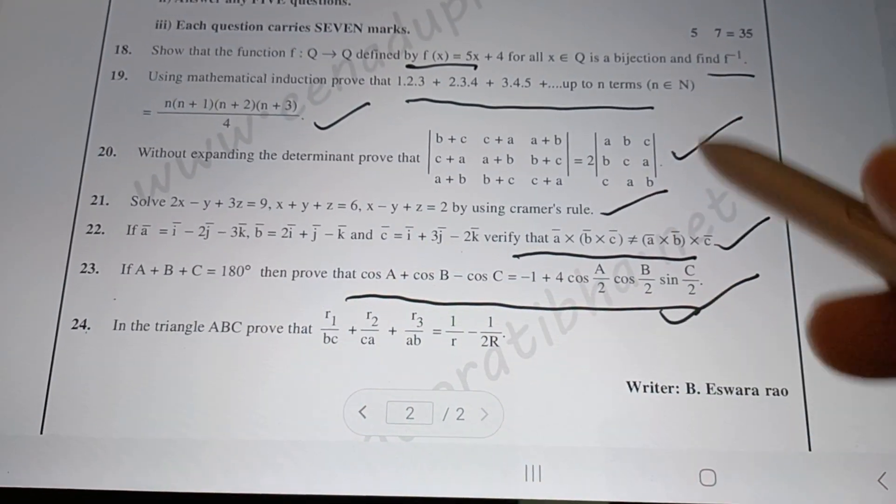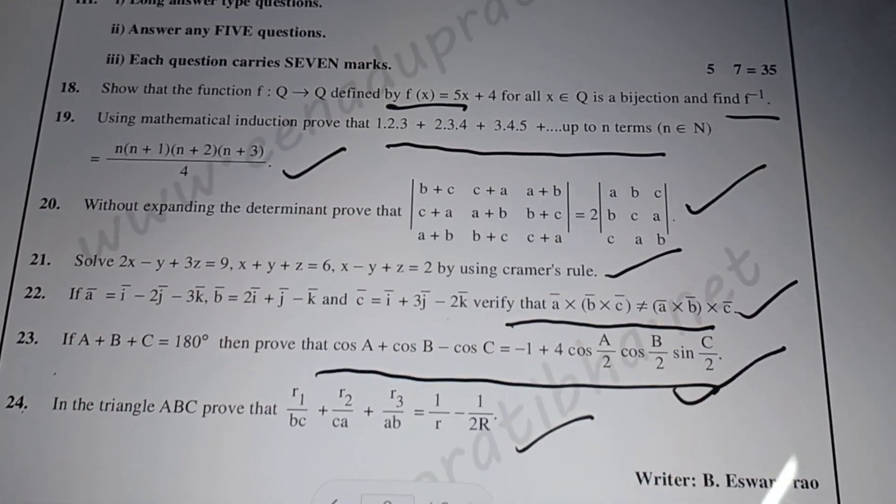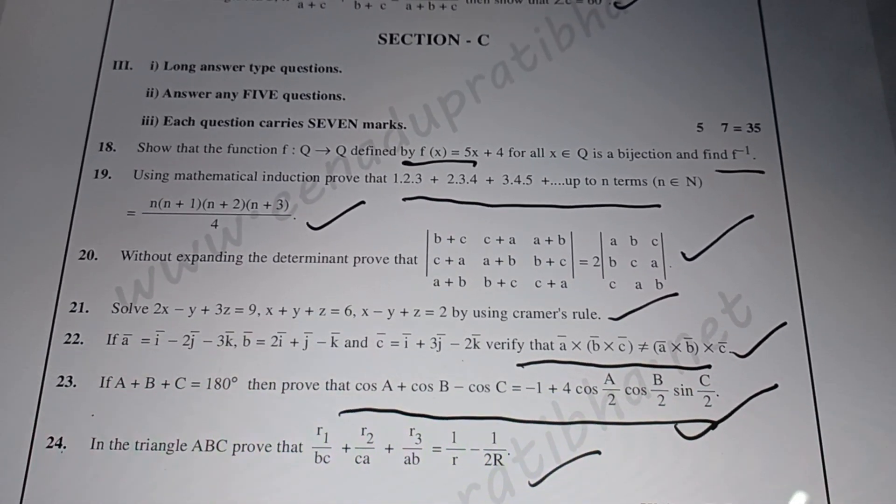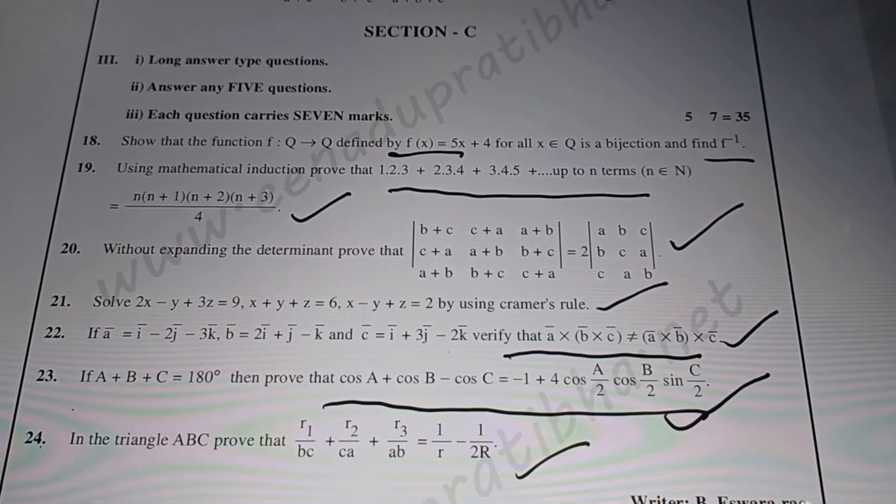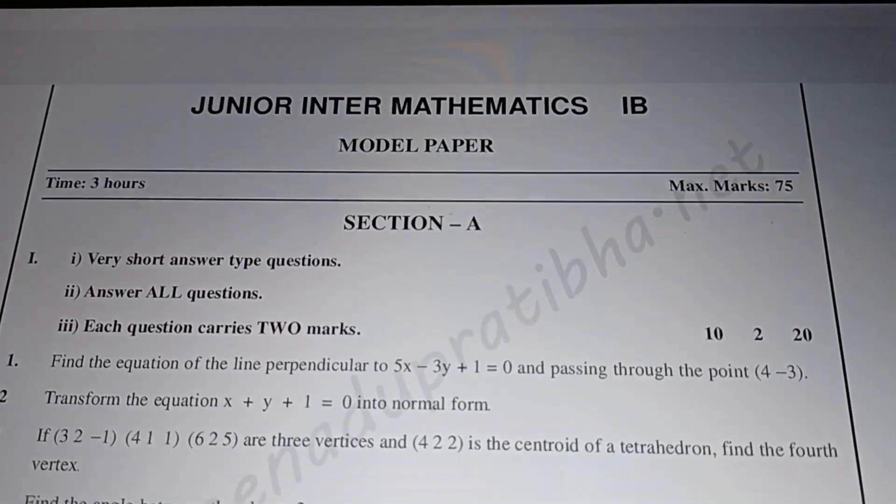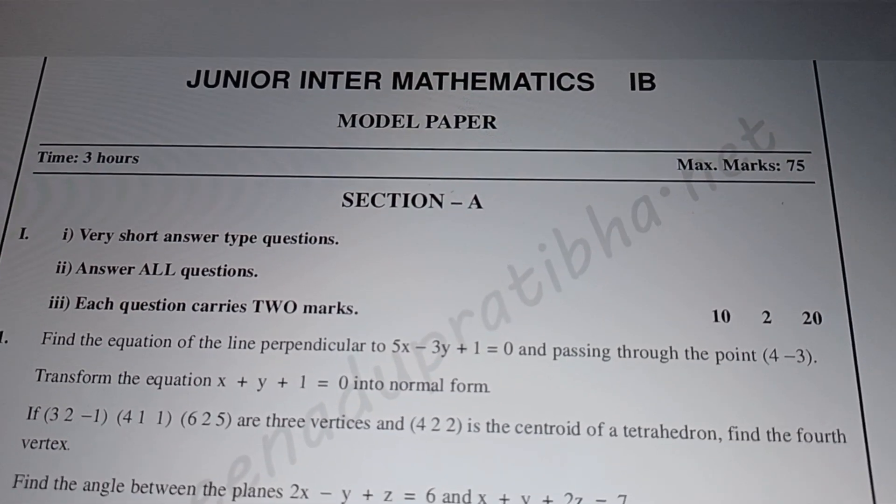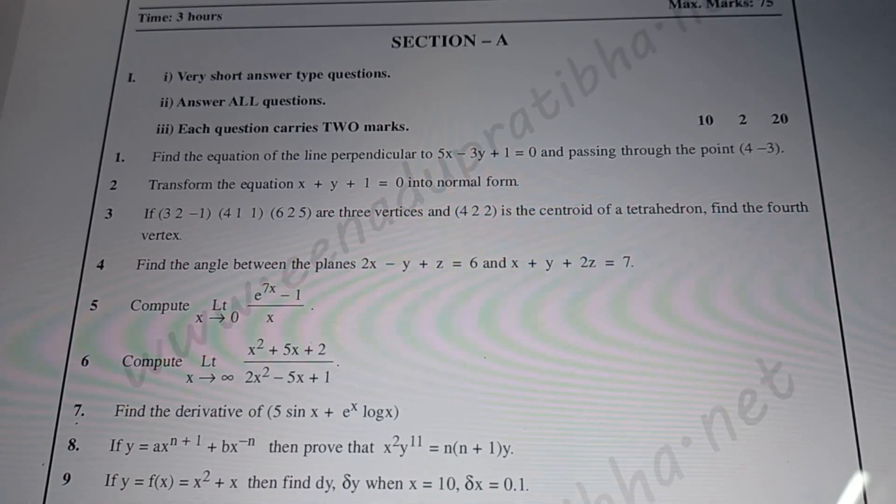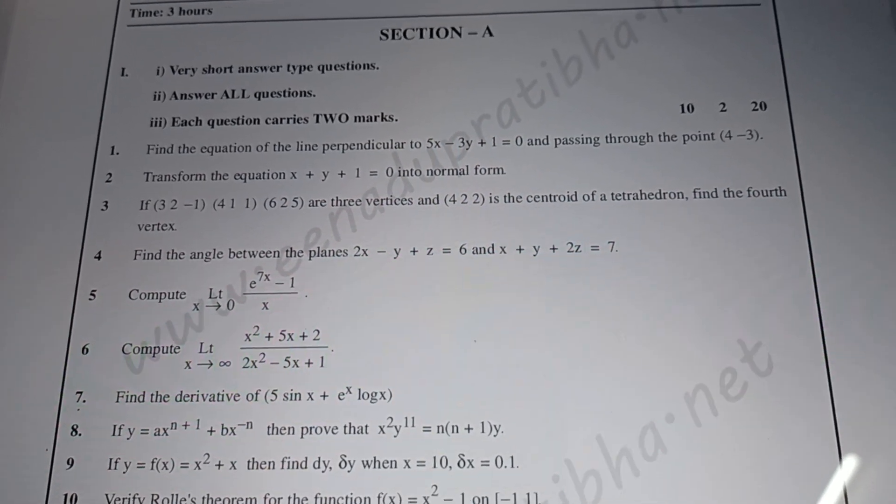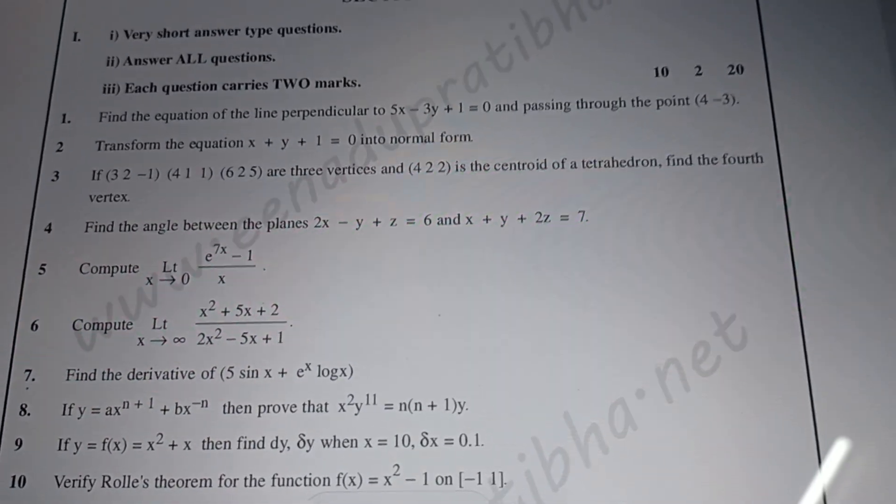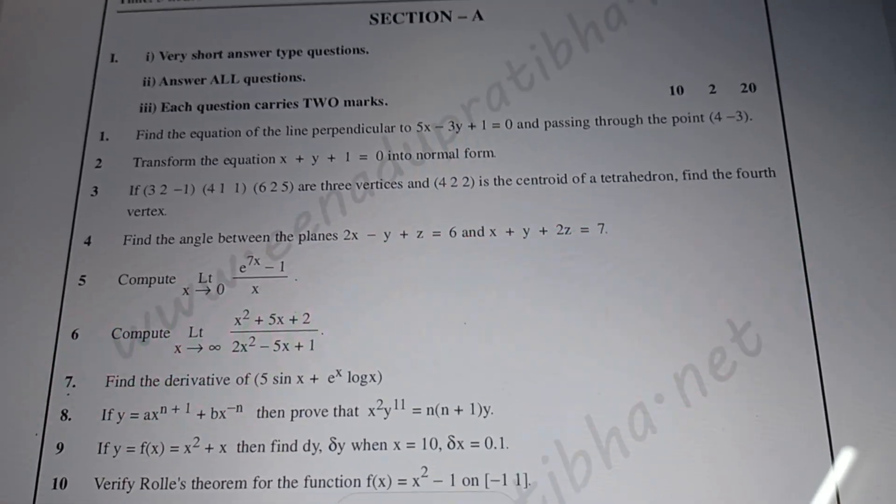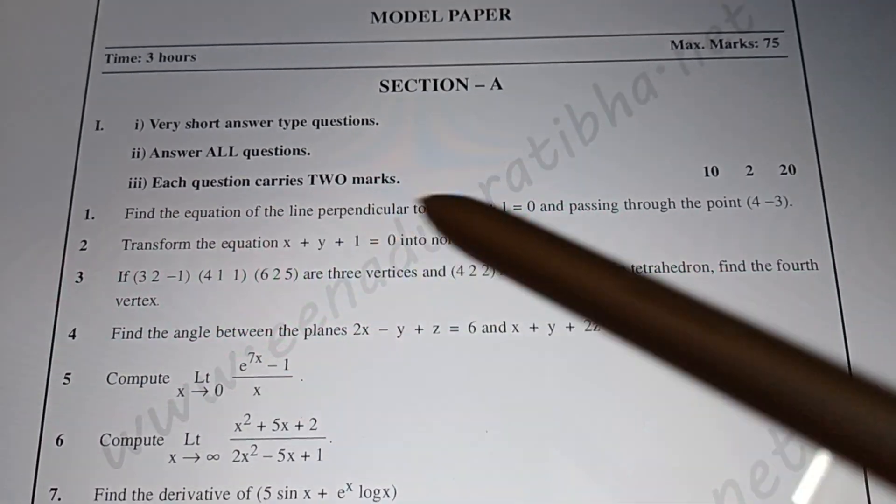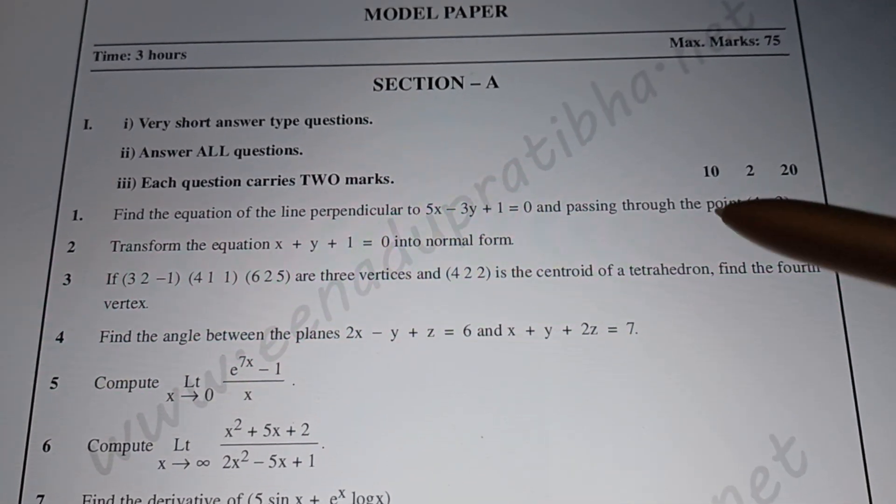Now let's discuss the Intermediate Math 1B model paper. In 1B, Section A has the same format - 2 marks questions, 10 questions totaling 20 marks. Section B is 20 marks, Section C is 35 marks. The 1B paper covers straight lines and transformation in questions 1 and 2.